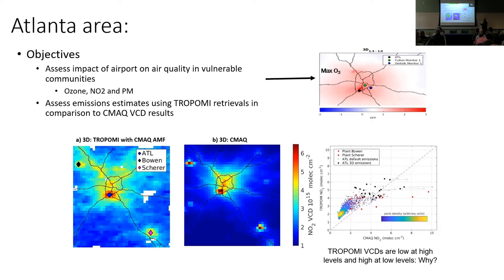One of the first things you always want to do is compare the observations and retrievals with CMAQ. We got pretty good agreement, though you did see that at higher levels there was a low bias between TROPOMI and CMAQ, and at lower levels, an opposite bias. By combining the two, we're able to look at ozone — specifically the maximum ozone impact of the airport — as well as integrating the two to look at particulate matter impacts.